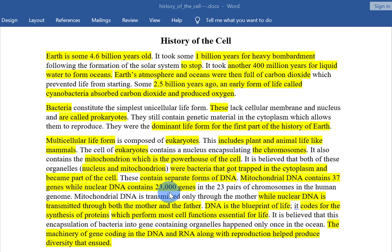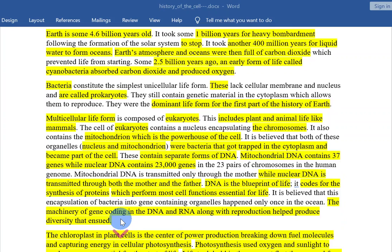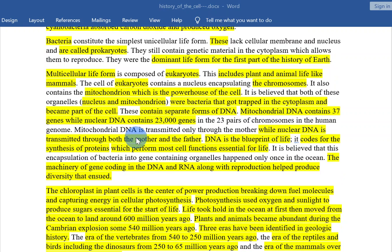These organelles contain separate forms of DNA. Mitochondrial DNA contains 37 genes, while nuclear DNA contains some 23,000 genes in 23 pairs of chromosomes in the human genome. Mitochondrial DNA is transmitted only through the mother, while nuclear DNA is transmitted through both the mother and the father.